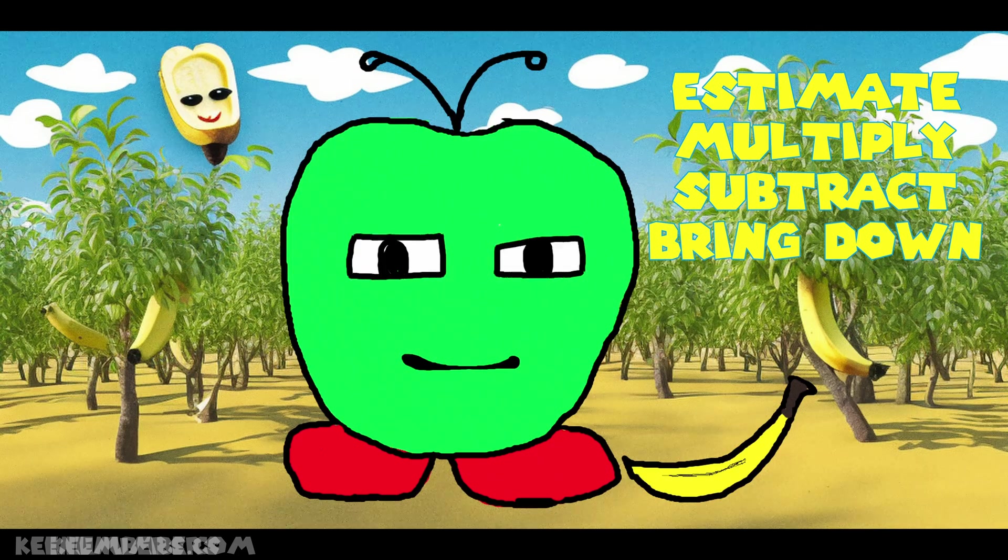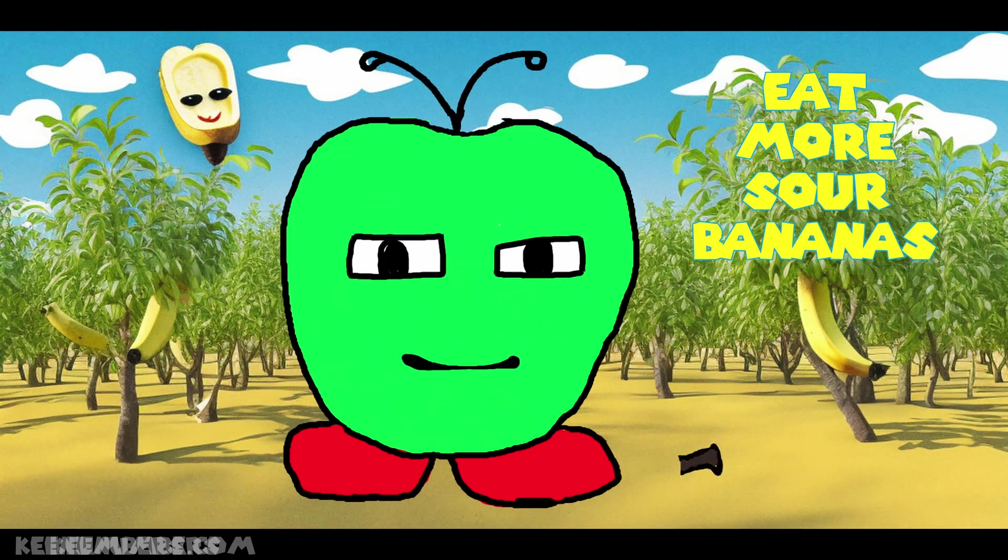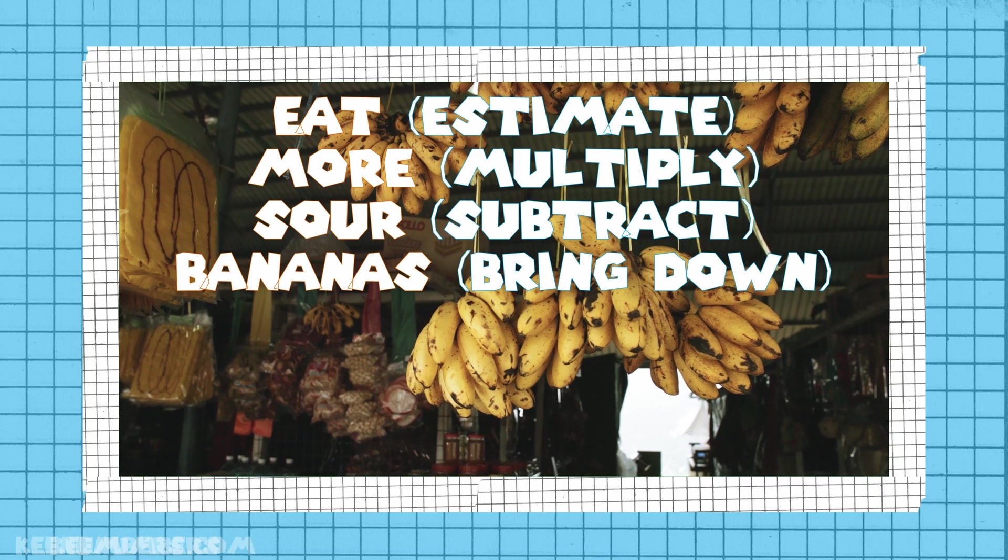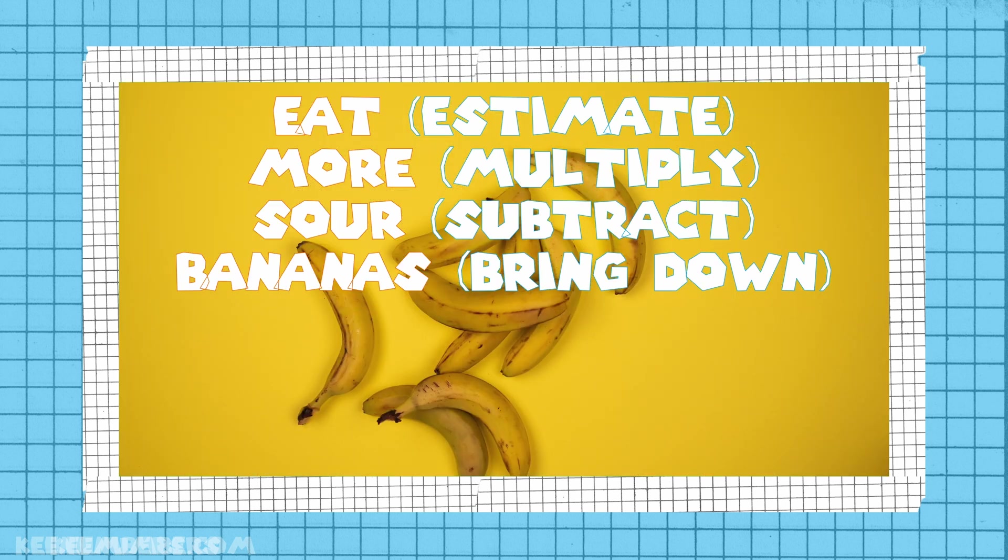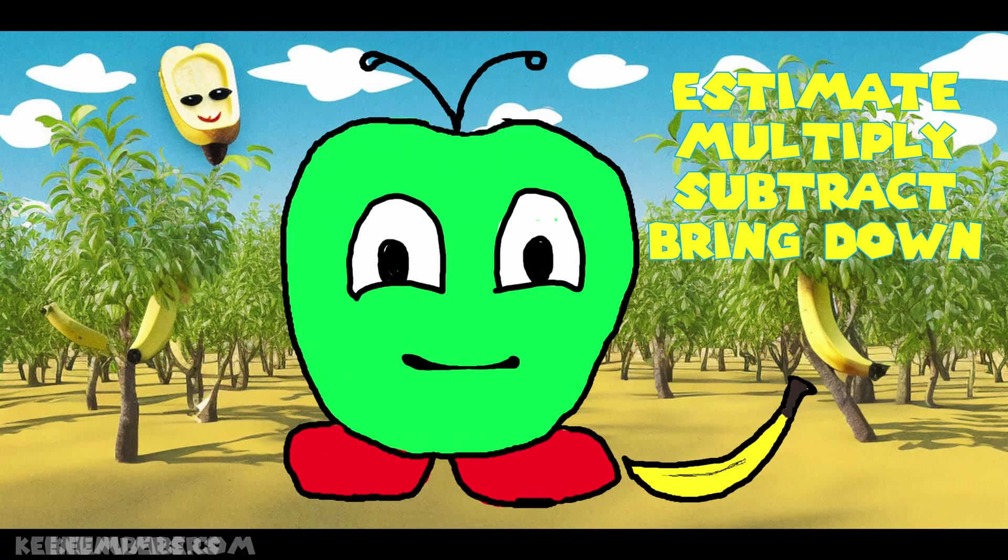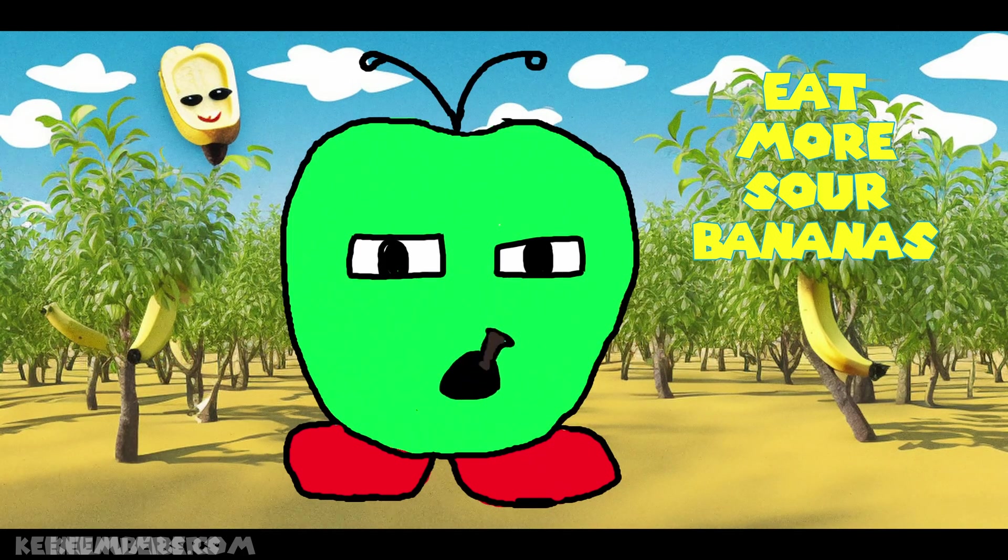Estimate, multiply, subtract, bring down. A nifty way to remember that sequence is to say 'eat more sour bananas.' E is for estimate, M is for multiply, S is for subtract, and B is for bring down.